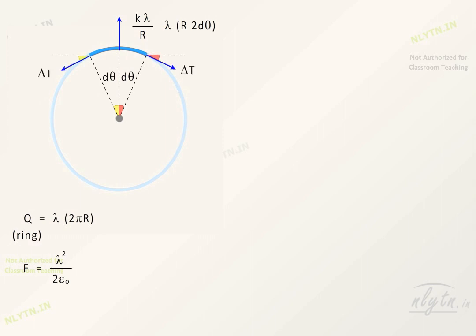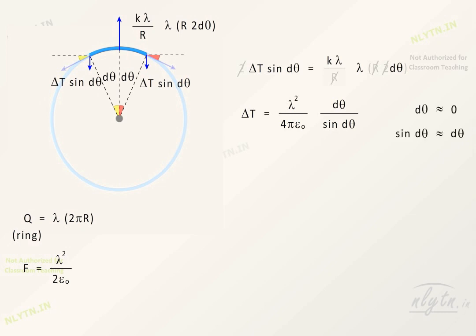Tension in the ring increases to balance this component of force. Resolving tension into components and considering forces along this direction, we have this equation. Solving this equation, we get the increase in tension.